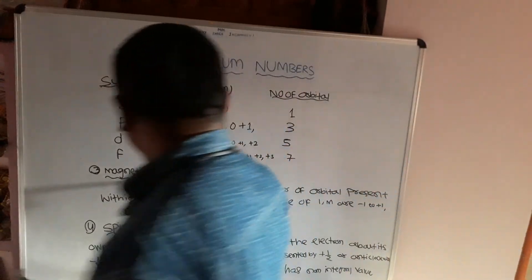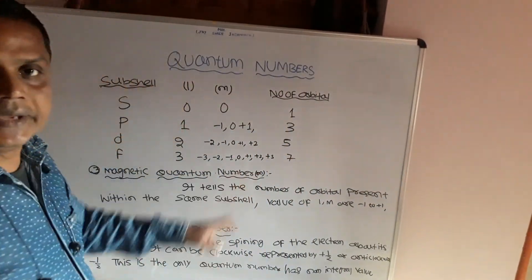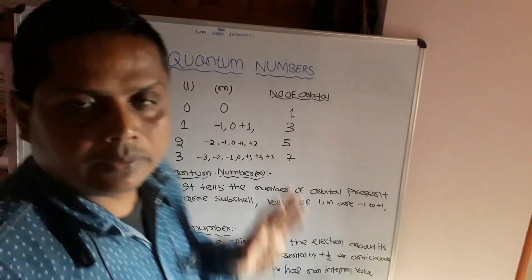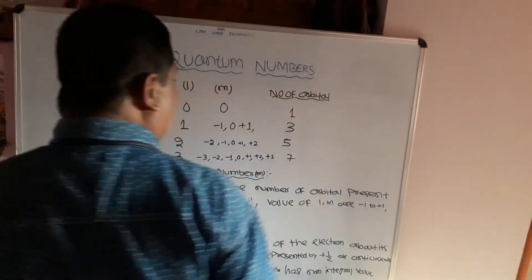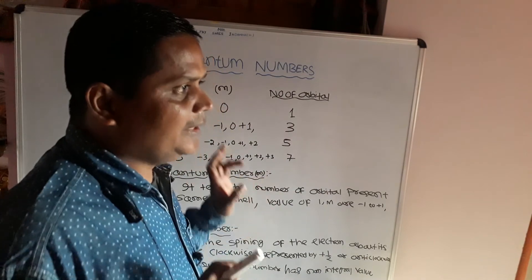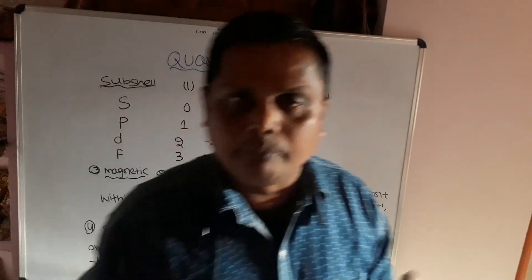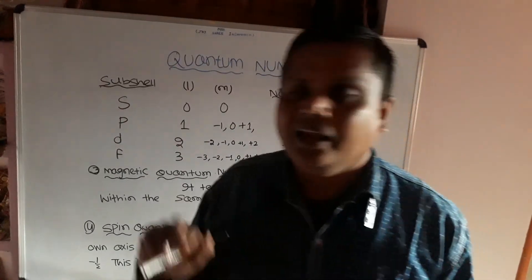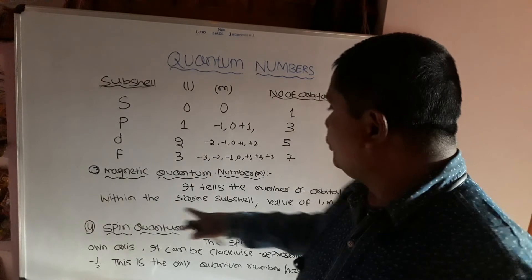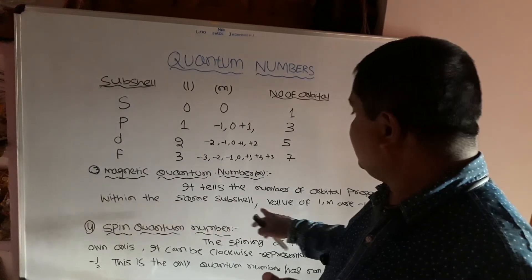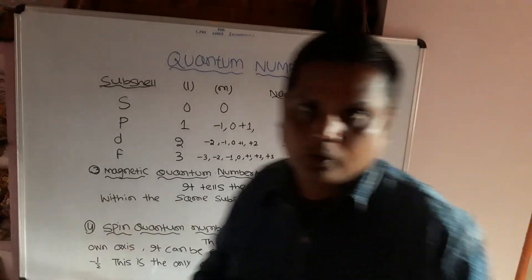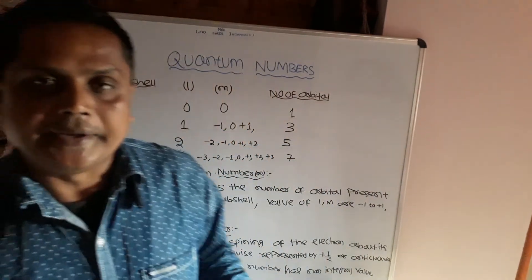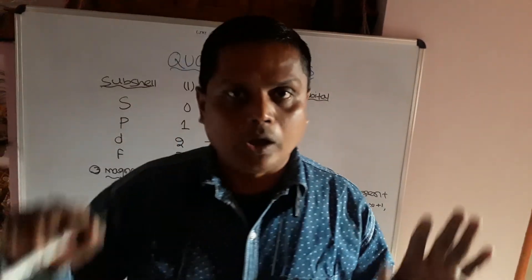The magnetic quantum number m tells the number of orbitals present within the same sub-shell. Its values range from minus l to plus l, including zero, giving values of -l, ..., -1, 0, +1, ..., +l.